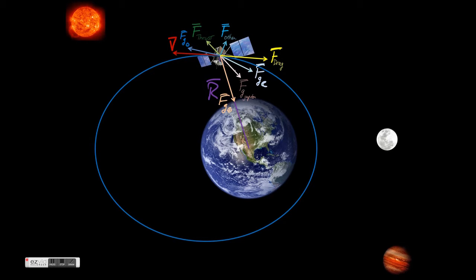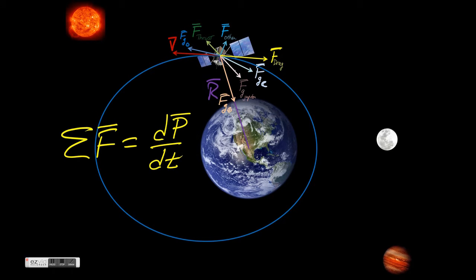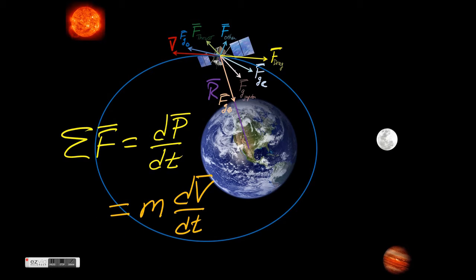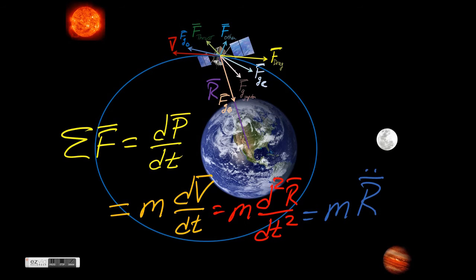We learned in our introductory mechanics classes that we need to sum these forces, and that summation must equal, according to Newton's second law, the time rate of change of the satellite's momentum, or dp/dt. Let's simplify this equation and assume that we're not using any thrusters or doing anything that would cause our mass to change. If that's the case, then Newton's second law becomes m times the second derivative of the position vector — r double dot — or just mass times acceleration, ma. For our purposes, let's use the mr̈ expression.